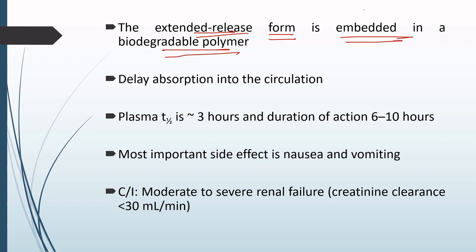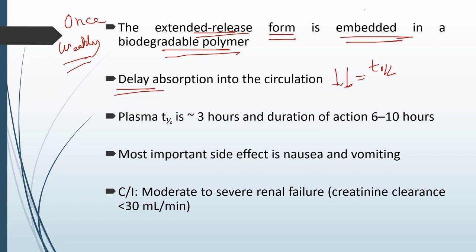The once-weekly formulation of Exenatide is an extended-release form where the drug is embedded within a biodegradable polymer. Since it is kept within a biodegradable polymer, absorption of the drug into the circulation is delayed, and naturally the T-half of the drug increases — hence it can be given once weekly. The normal form of Exenatide has a plasma T-half of 3 hours and a duration of action of 6 to 10 hours, so it is given twice daily.